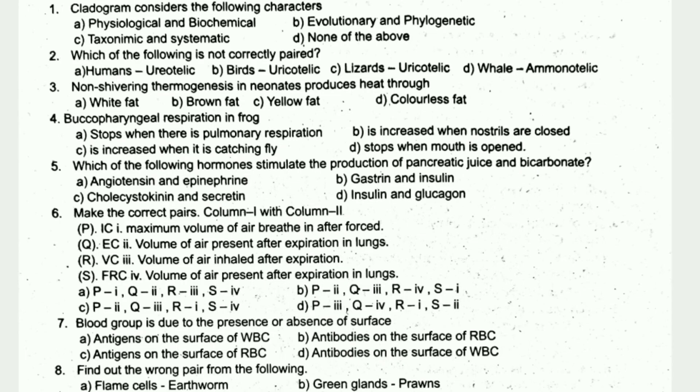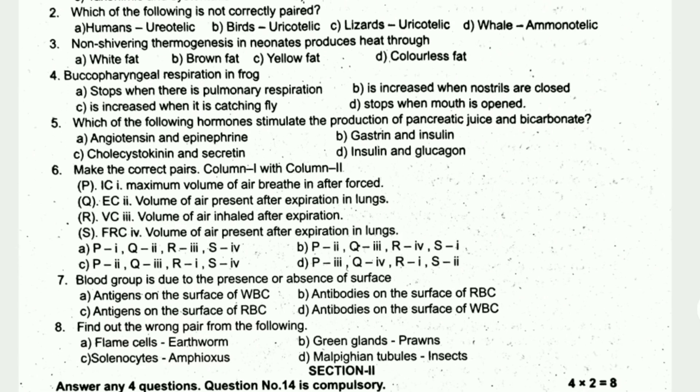Non-shivering thermogenesis in neonates produces heat through... Make the correct pairs. Blood group is due to the presence and absence of surface antigens. Find out the wrong pair from the following.